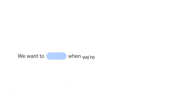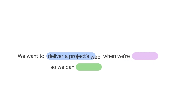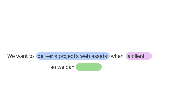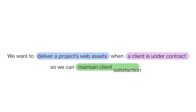Start by defining the goal with this statement: we want to, when we're, so we can. A web agency might say: we want to deliver a project's web assets when a client is under contract so we can maintain client satisfaction.